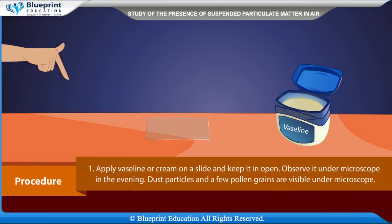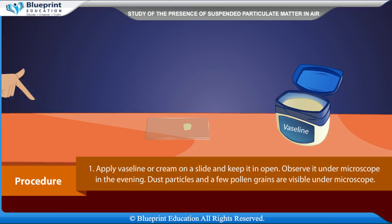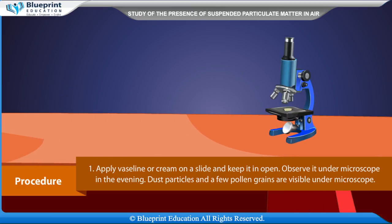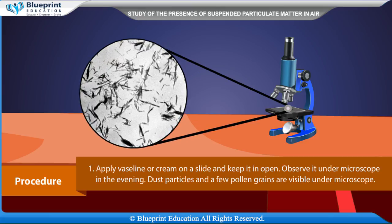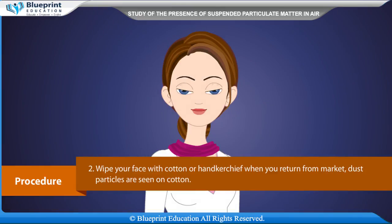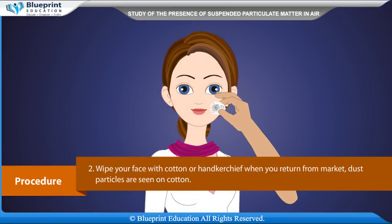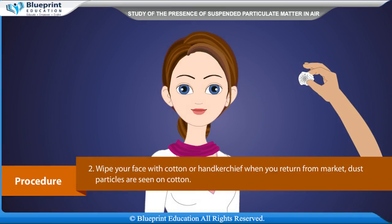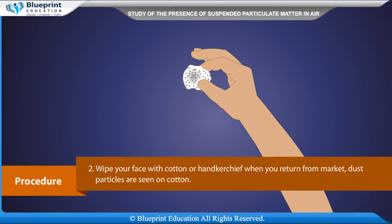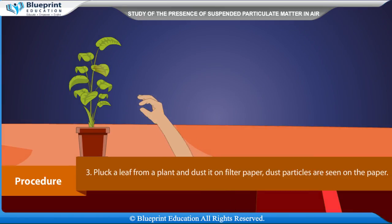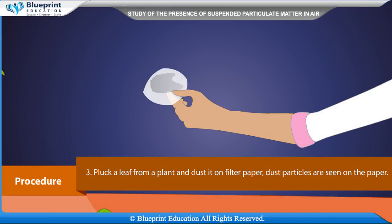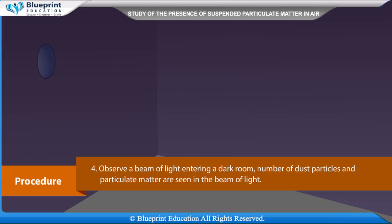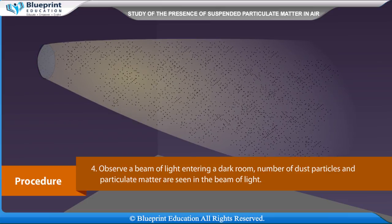Procedure: Apply Vaseline or cream on a slide and keep it in the open. Observe it under a microscope in the evening — dust particles and a few pollen grains are visible. Wipe your face with cotton or a handkerchief when you return from the market; dust particles are seen on the cotton. Pluck a leaf from a plant and dust it on filter paper; dust particles are seen on the paper.